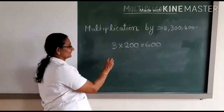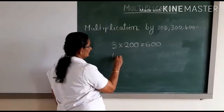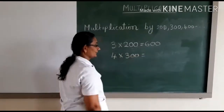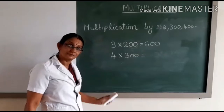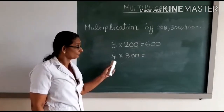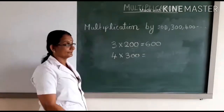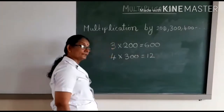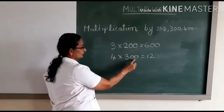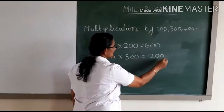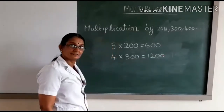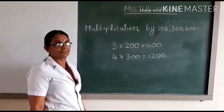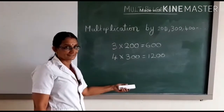Now we will see one more example: 4 into 300. What is 4 into 3? First we have to multiply 4 and 3. 4 into 3 is equal to 12. Then you have to place two zeros to the right. So 4 into 300 is equal to 1200. That is the answer.